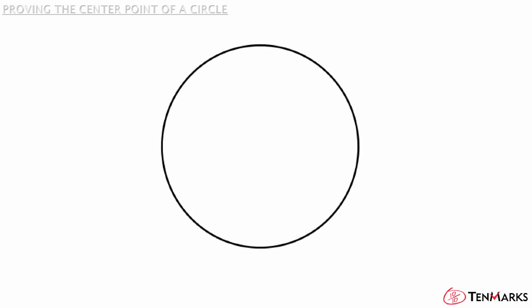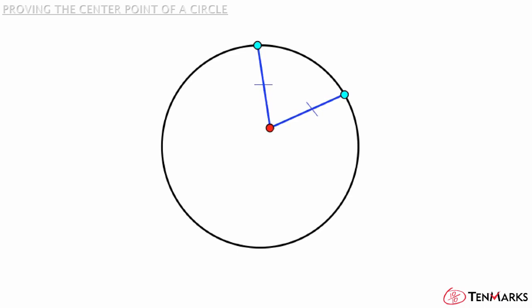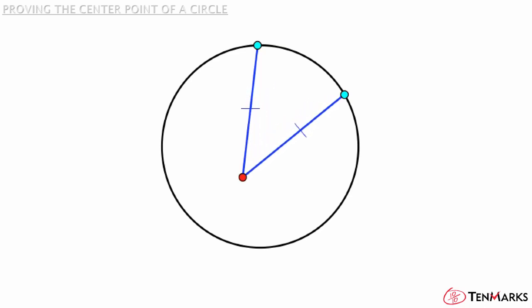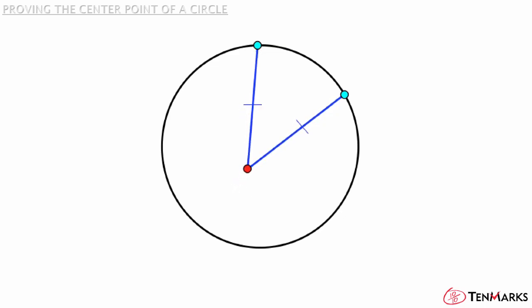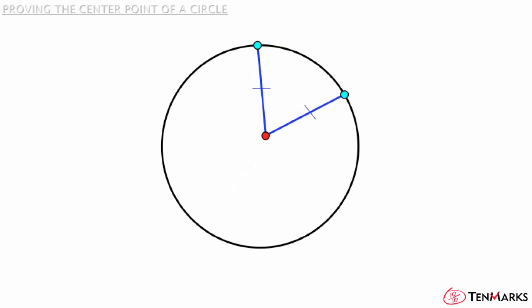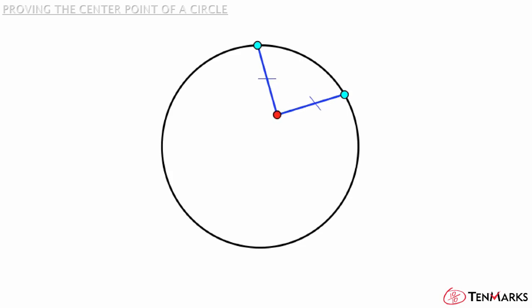Let's say you find a point inside the circle that's equidistant to two points on the circle. You can see right away that this point can be equidistant to two points on the circle and not be the center. In fact, there are infinitely many points inside the circle that are equidistant from these two points on the circle. So this one doesn't work.